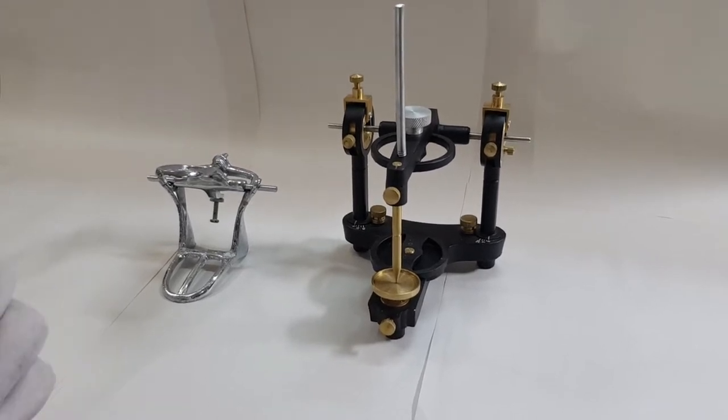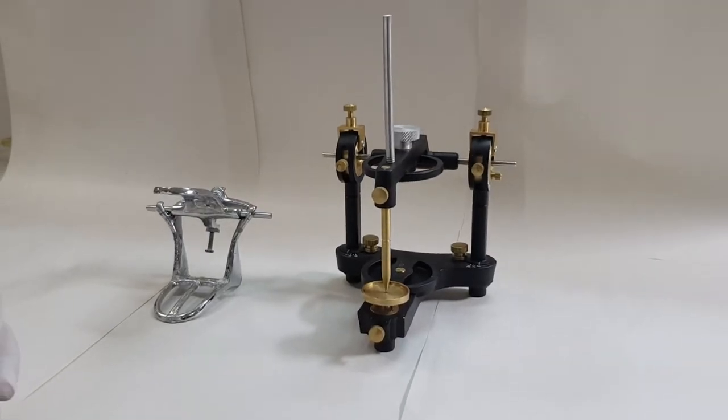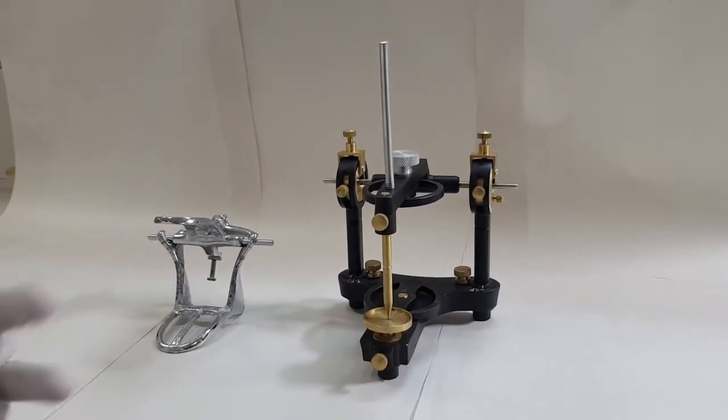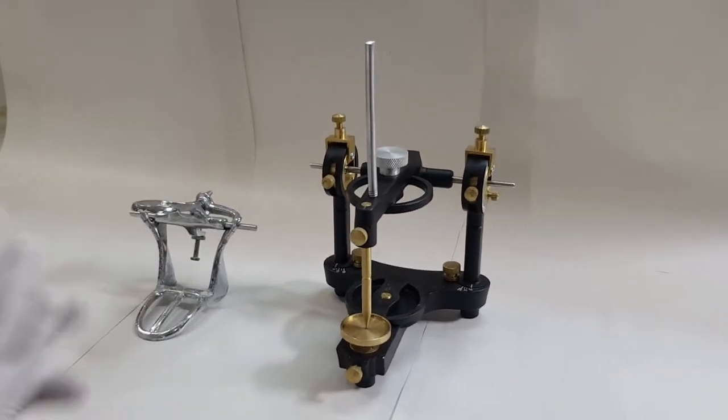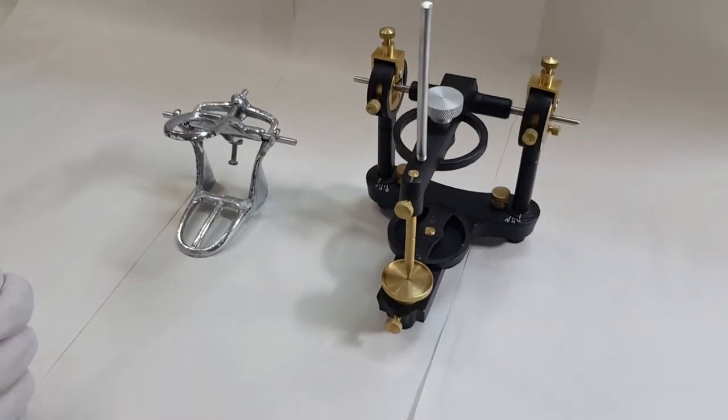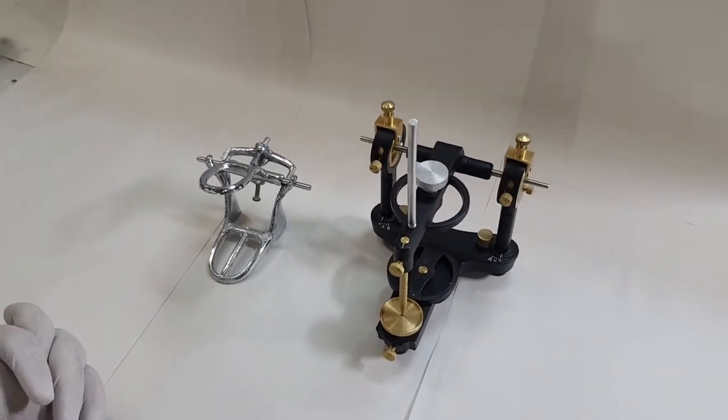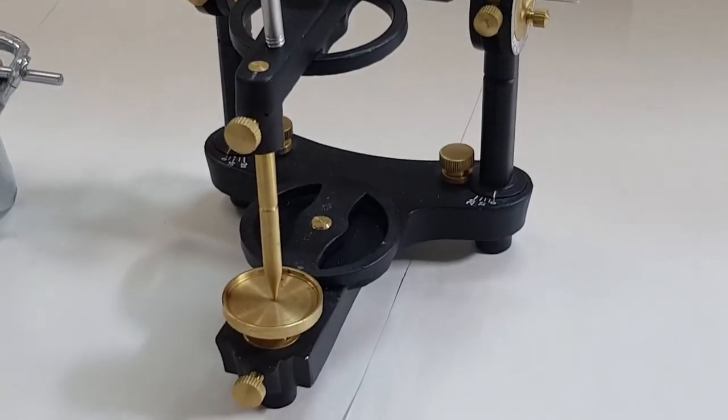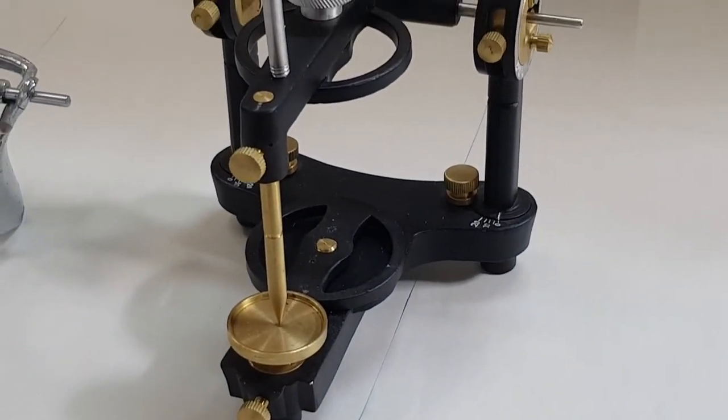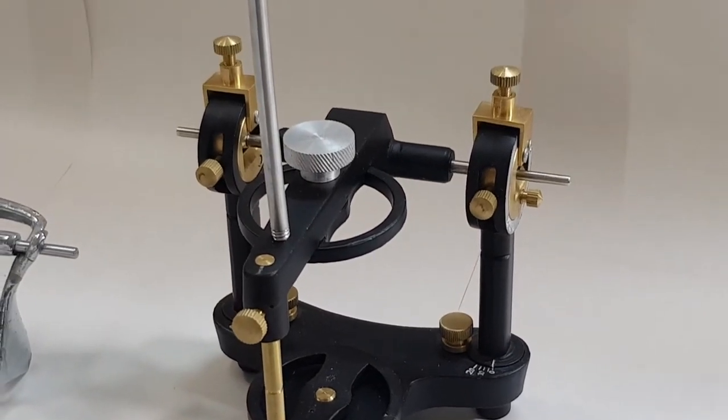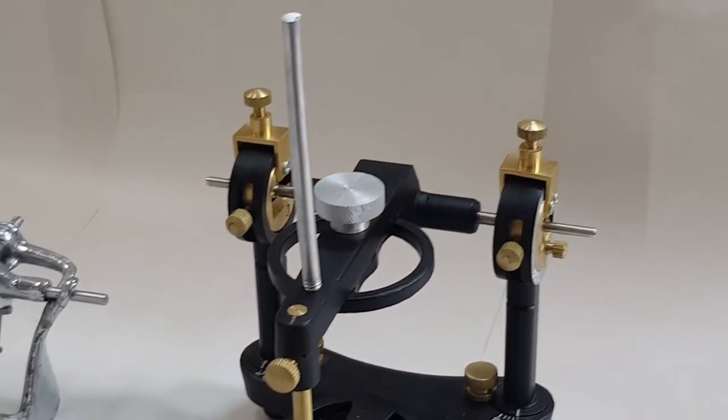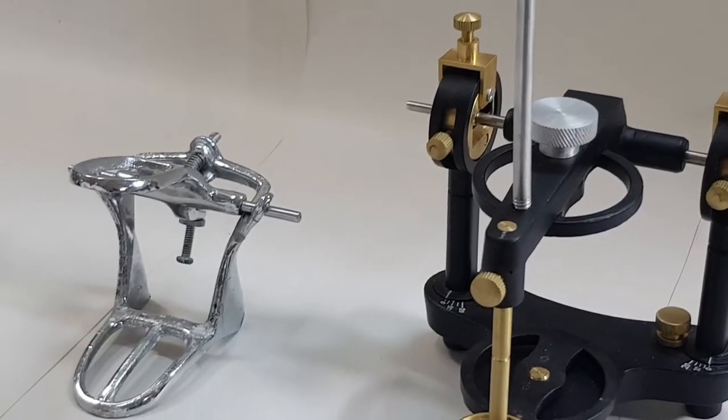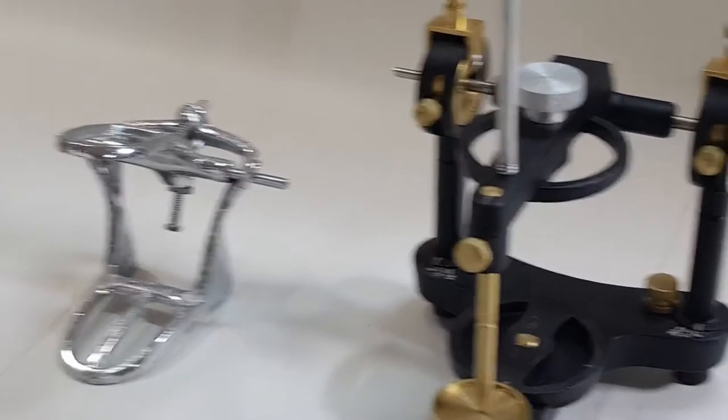Remember, we can't perform all the procedures in a patient. So for certain procedures, we need to use the laboratory. And if we want to use the laboratory, then we need to make sure that the appliances or apparatus that we are going to use mimics some or all of the movements that the patient's mandible is producing. For this, different types of articulators have been described.